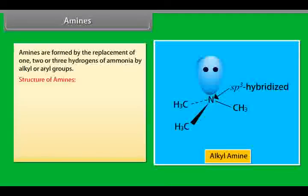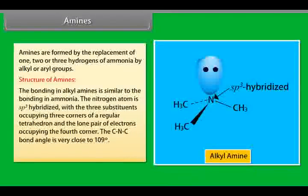Structure of amines. The bonding in alkyl amines is similar to the bonding in ammonia. The nitrogen atom is sp3 hybridized with the three substituents occupying three corners of a regular tetrahedron and the lone pair of electrons occupying the fourth corner. The C-N-C bond angle is very close to 109 degrees.